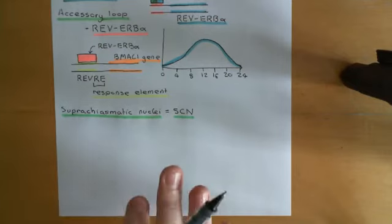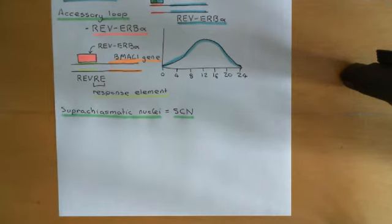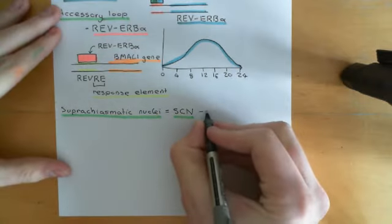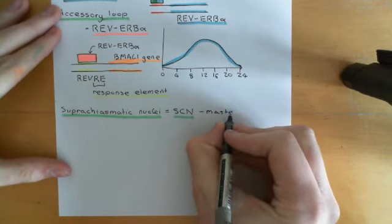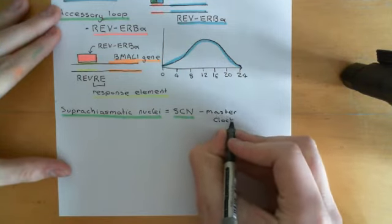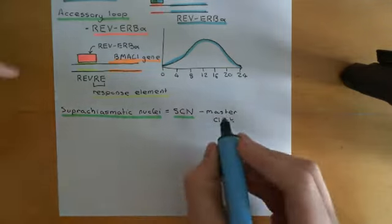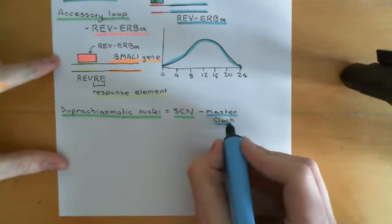So there are two jobs here. The SCN must first make sure that all cells are in synchrony with each other, and second, that they're in synchrony with the light-dark cycles. The suprachiasmatic nuclei are therefore often described as the master clocks. They are the clock which keeps all the other clocks in synchrony and determines what time all of the peripheral clocks are running at.